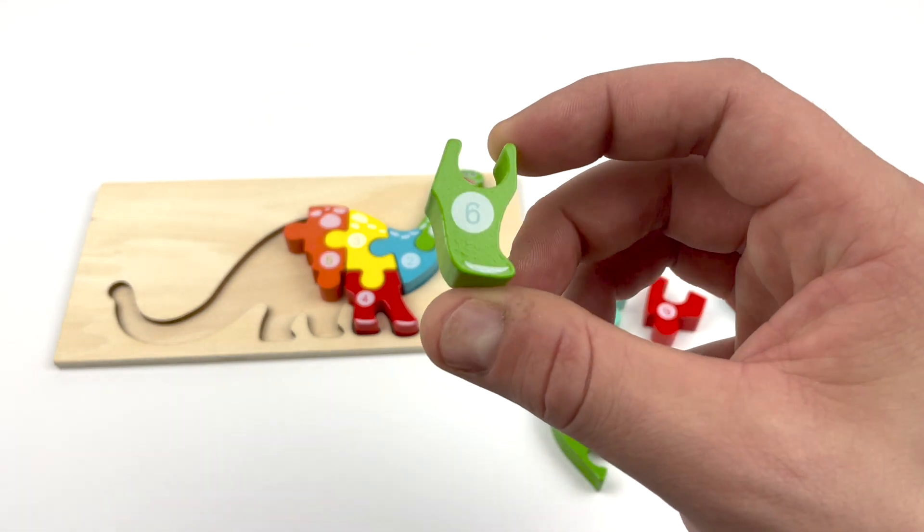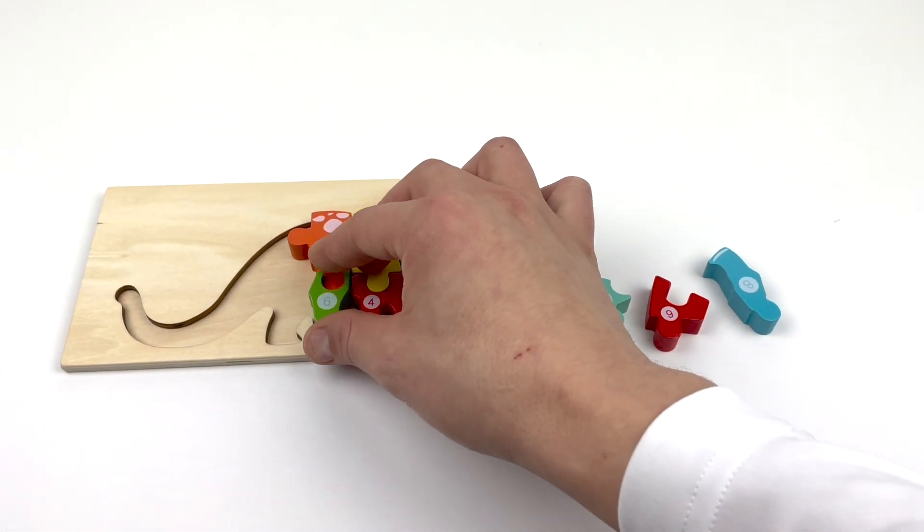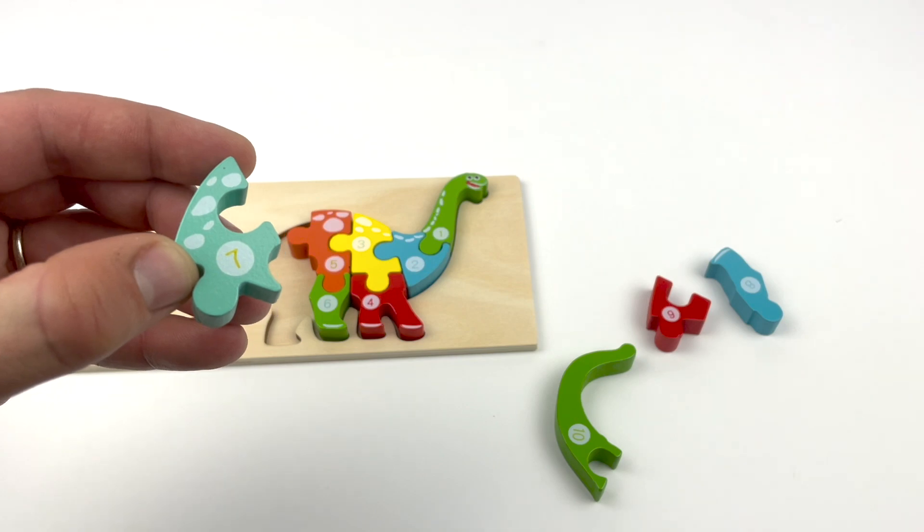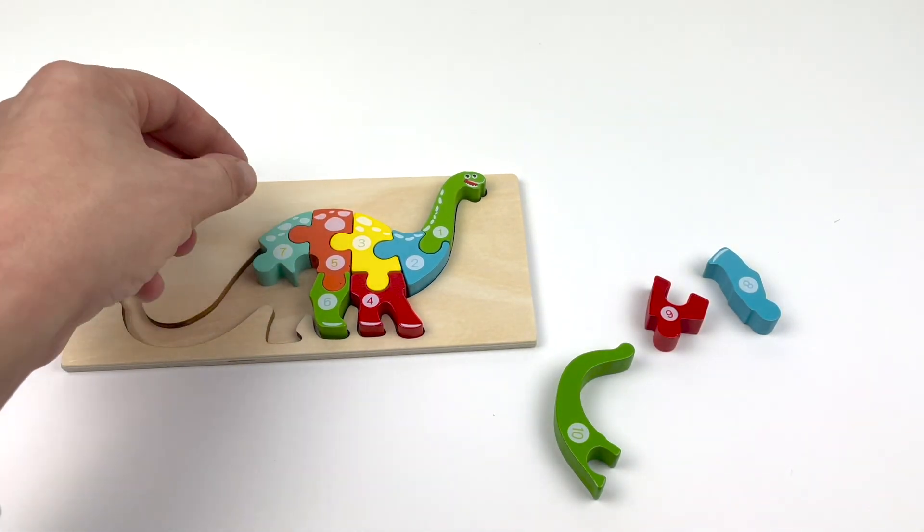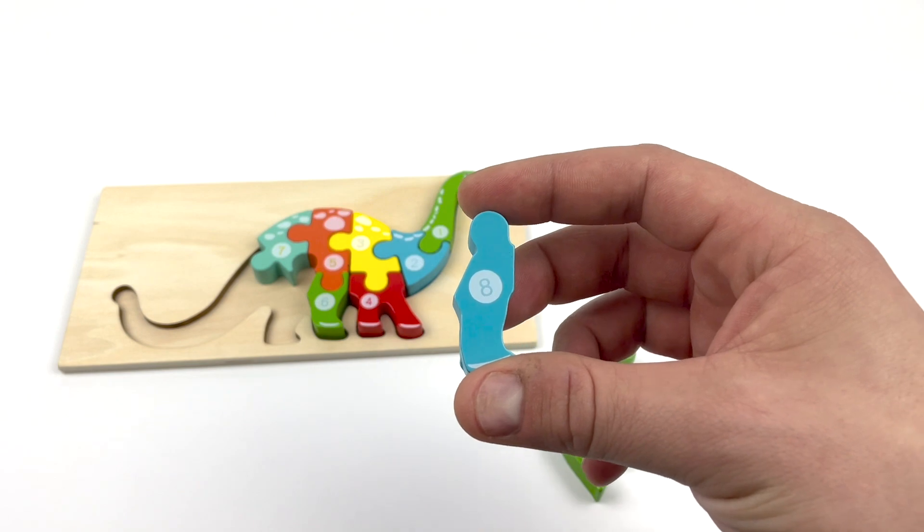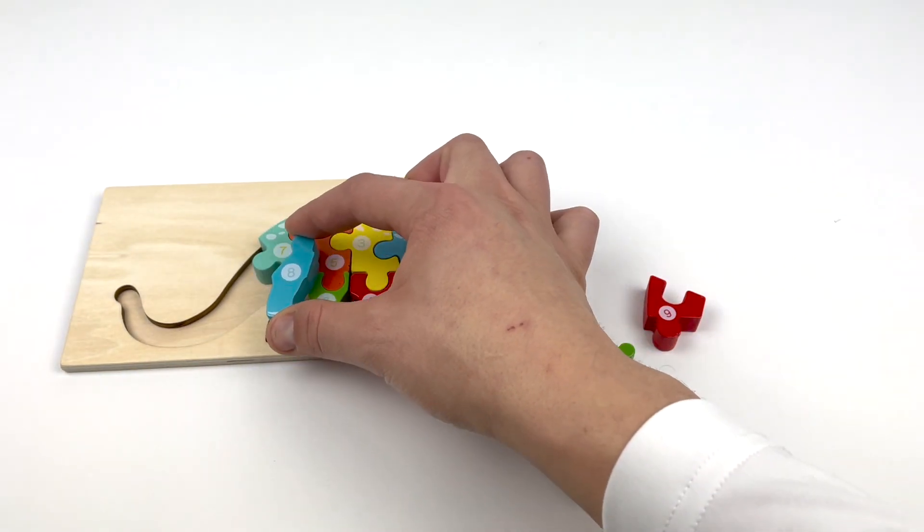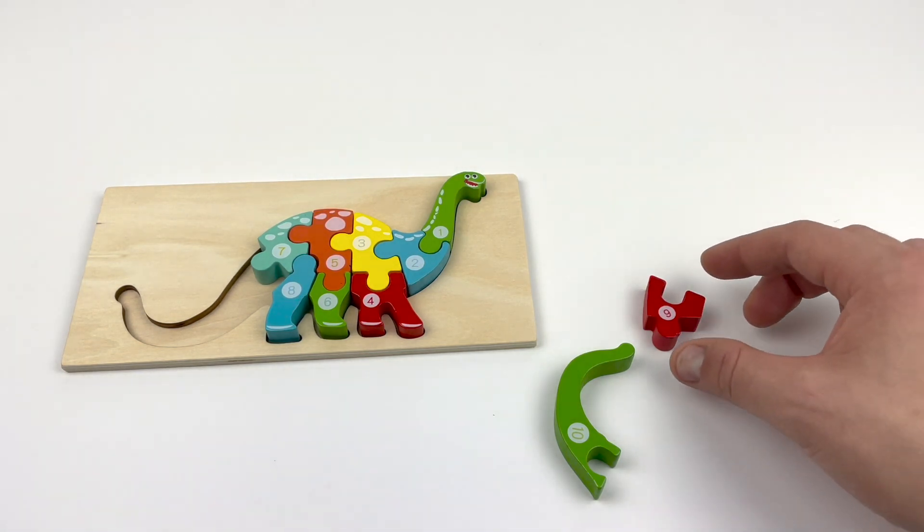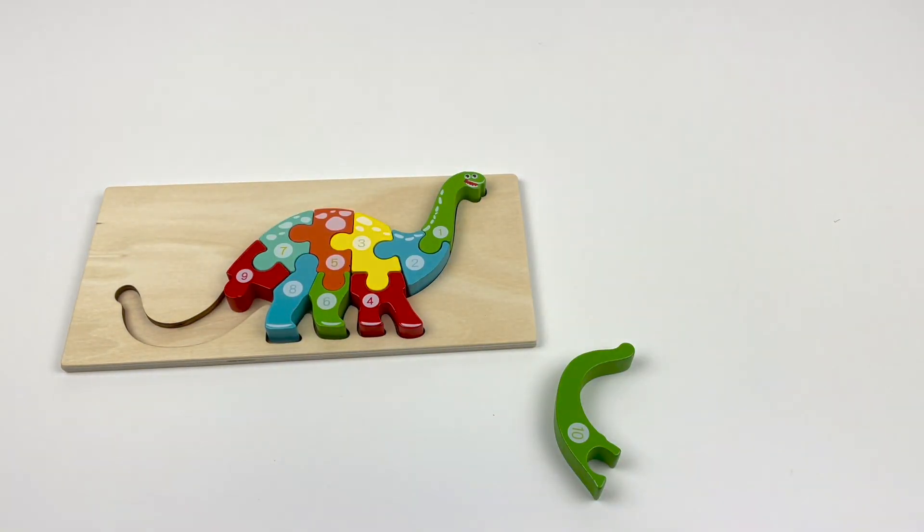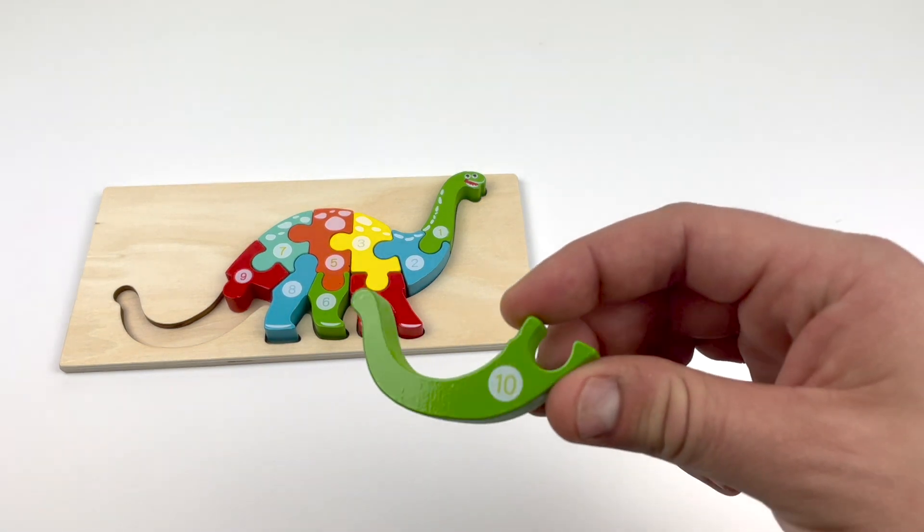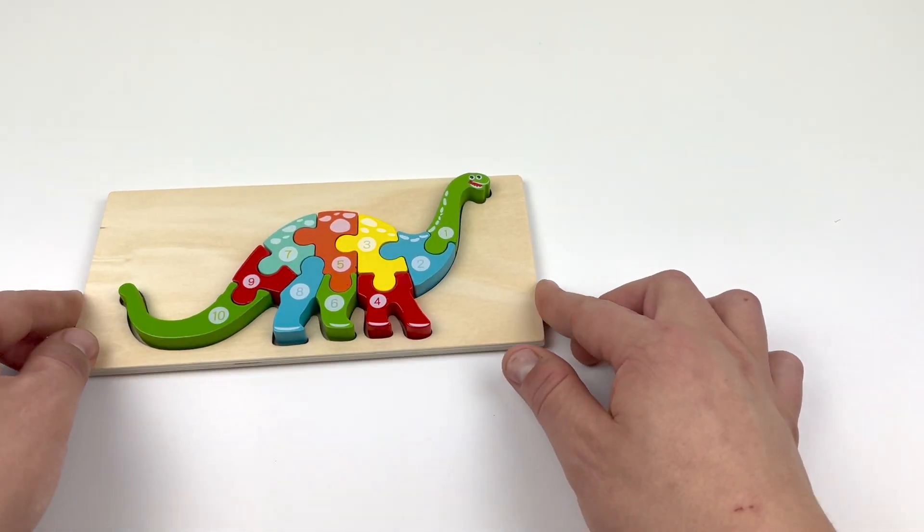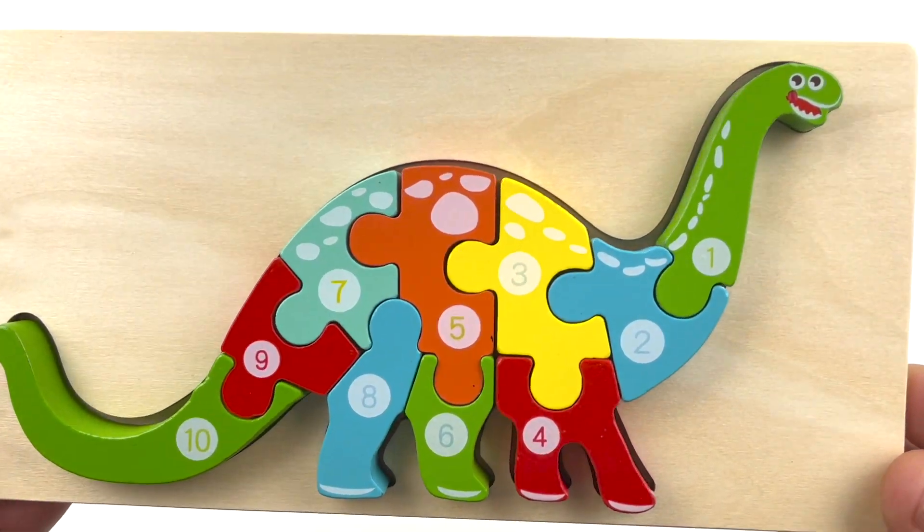Number six, green. Number seven, light blue. Number eight, blue. Number nine, red. And our next piece, number ten, green. And there's our first puzzle. Do you know what this is? It's a dinosaur. That's right.